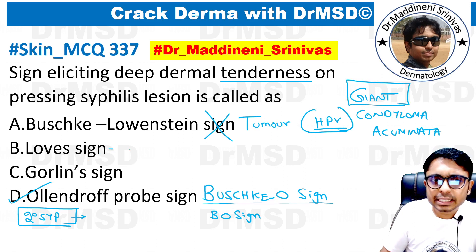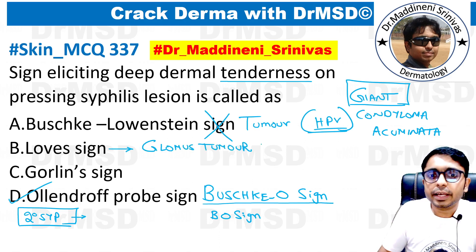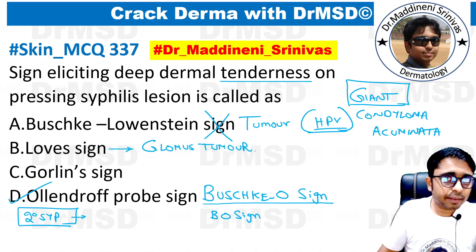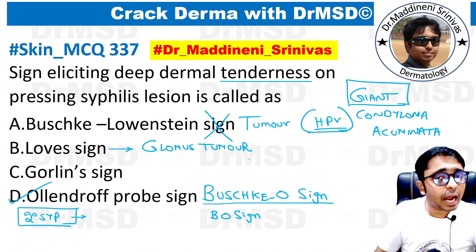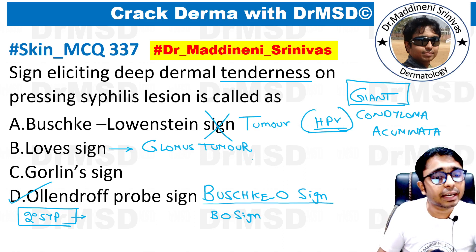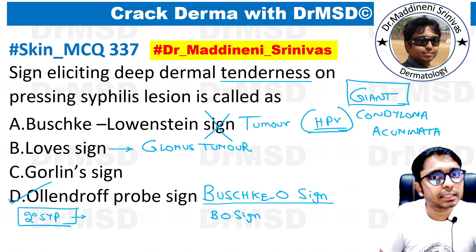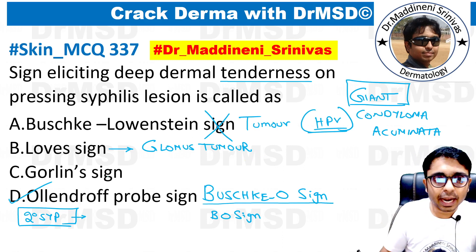And what is Lowaste sign? In patients of glomus tumor, if we take an alpin and press with the blunt end, the patient can exactly pinpoint where the tenderness is. This is called as Lowaste sign, and it is associated with glomus tumor.